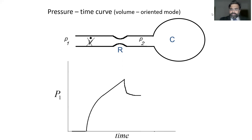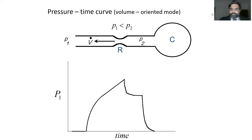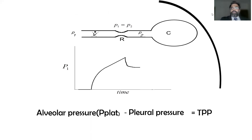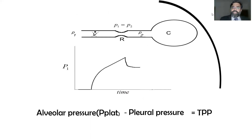We are usually measuring this plateau pressure and assuming it is the net distending pressure of the lung. But importantly, this alveolar or plateau pressure is also responsible for raising the chest wall. The transpulmonary pressure divides the alveolar pressure and pleural pressure to reveal the actual net distending pressure of the lung. Only by removing the pleural pressure from the plateau pressure can you find the true net distending pressure — and that is why monitoring pleural pressure is extremely important in order to find the transpulmonary pressure.